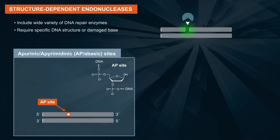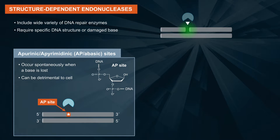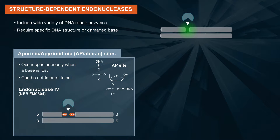Apurinic or apyrimidinic sites, also known as AP or abasic sites, are common and occur spontaneously in DNA when a base is lost. This can be detrimental to the cell. An example of an endonuclease that acts on an AP site is Endo IV.